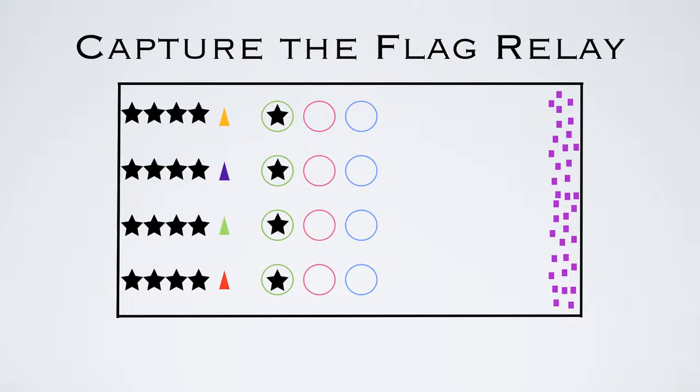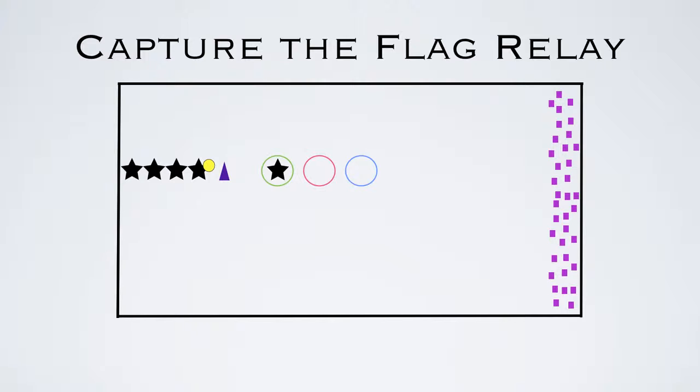One player from each team will start in the first hula hoop, the closest one to their cone. All teams will get a ball, either a foam ball or football. We're going to look at just one team for this example, though all teams will be doing the same thing at the same time.